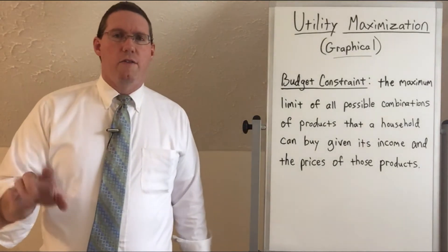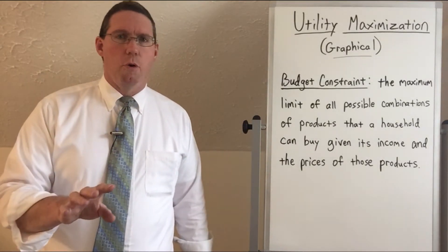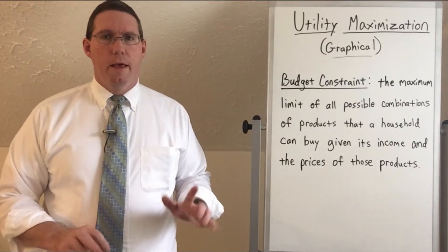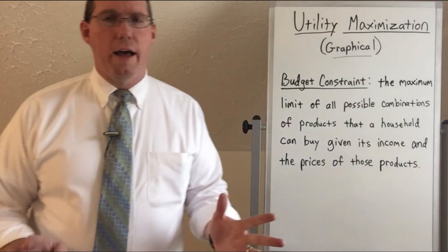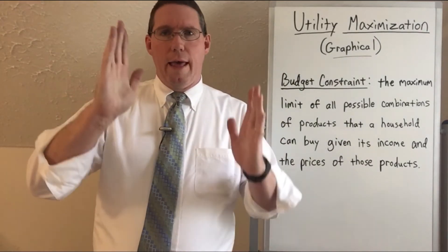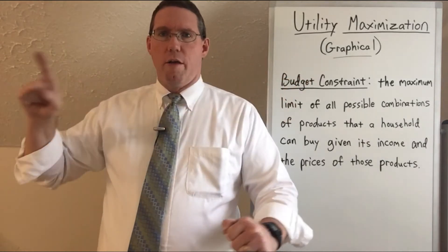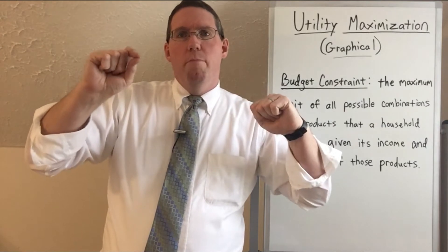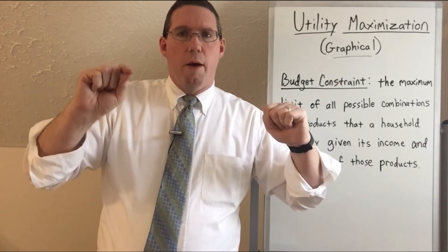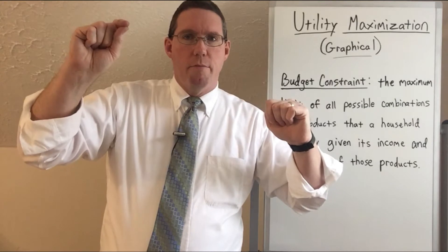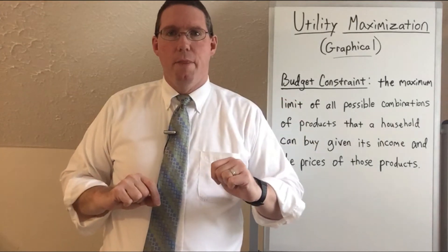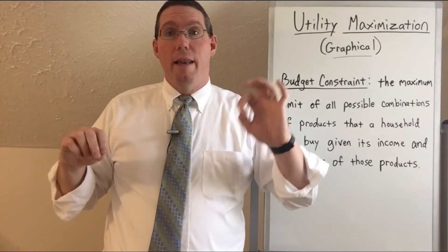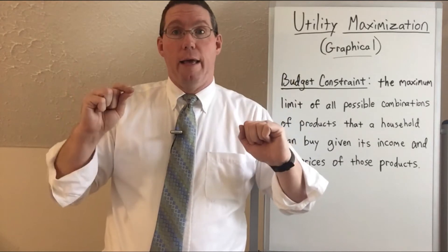Those are all the products that you or your household buys with the limited income that you have. Let's pretend that all 200 of those items are on a bar graph, all the way across — a really long slider. You can move milk up one at a time: one gallon, two gallons, three, up to seven. How many loaves of bread? How much cell phone service? How many pairs of shoes? How many shirts?